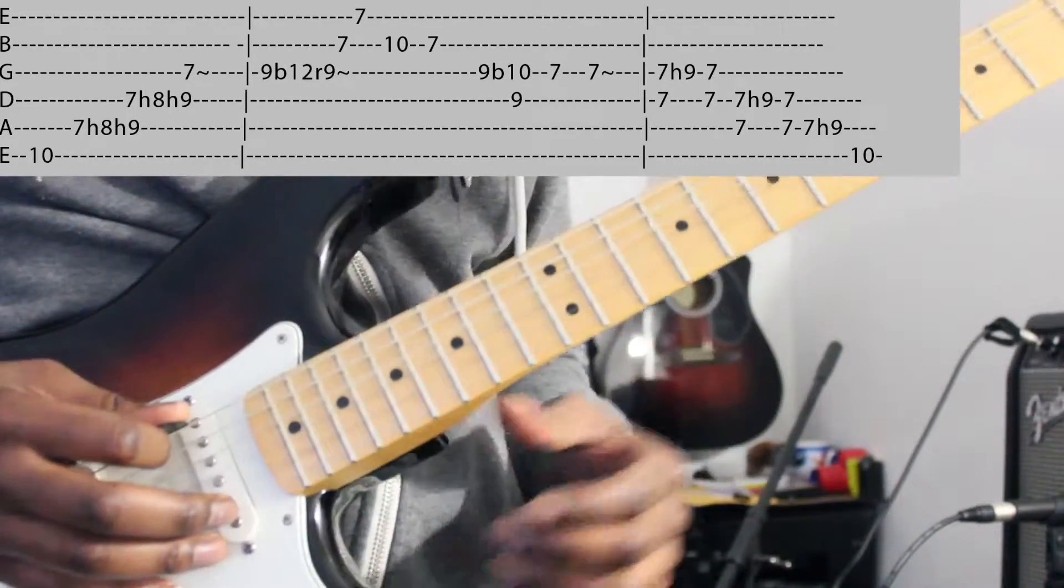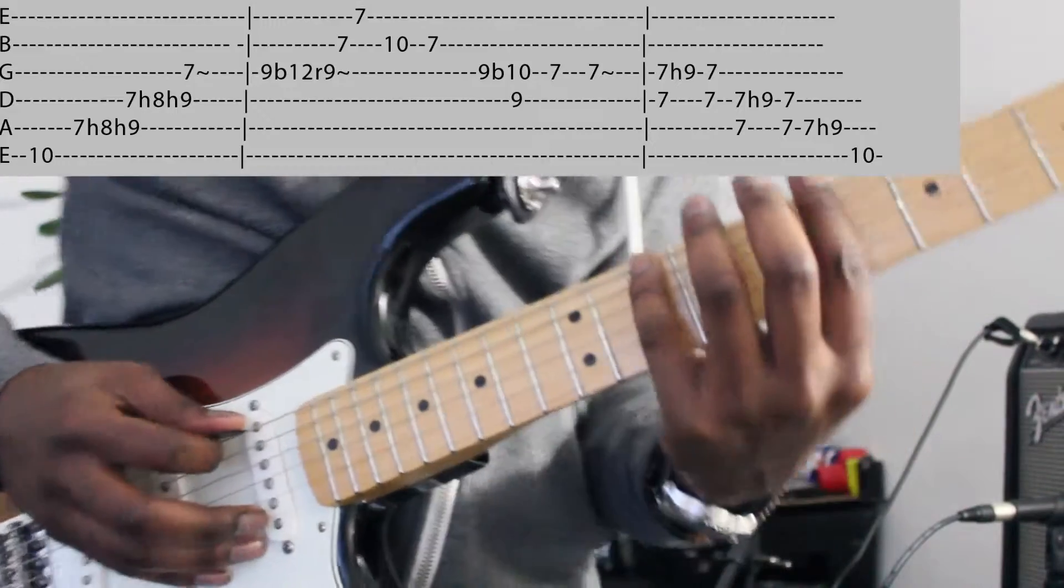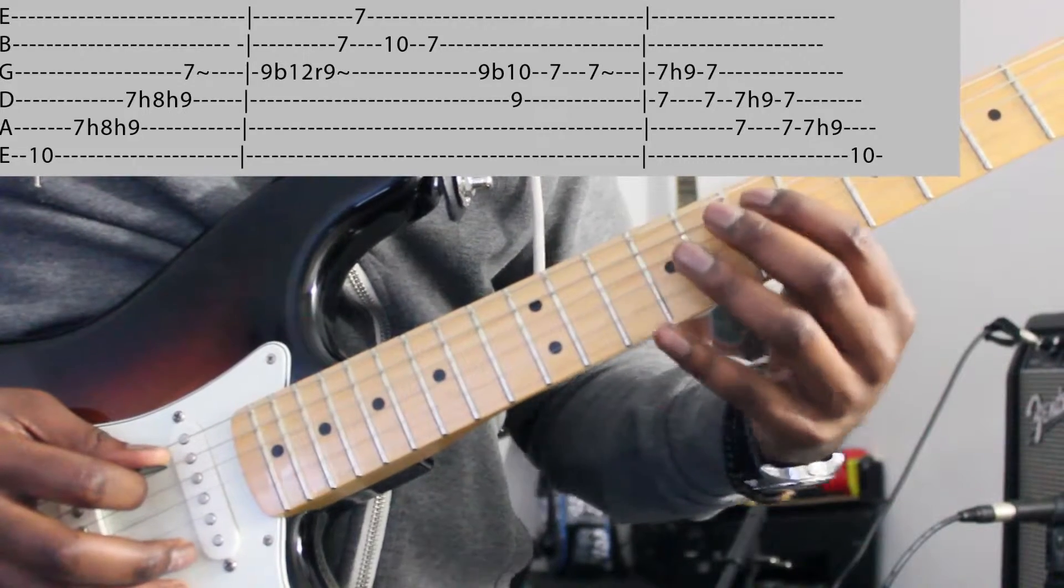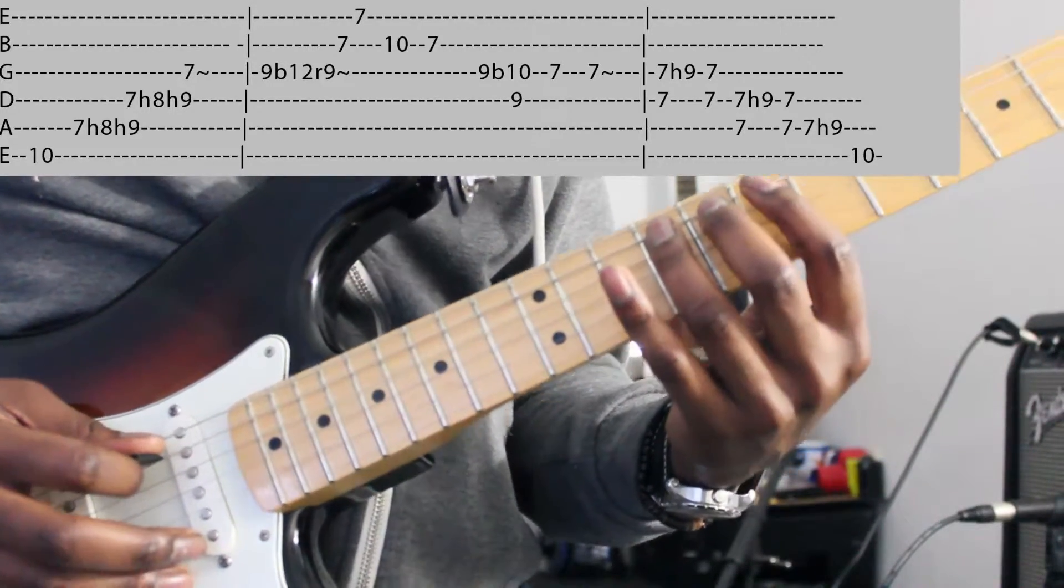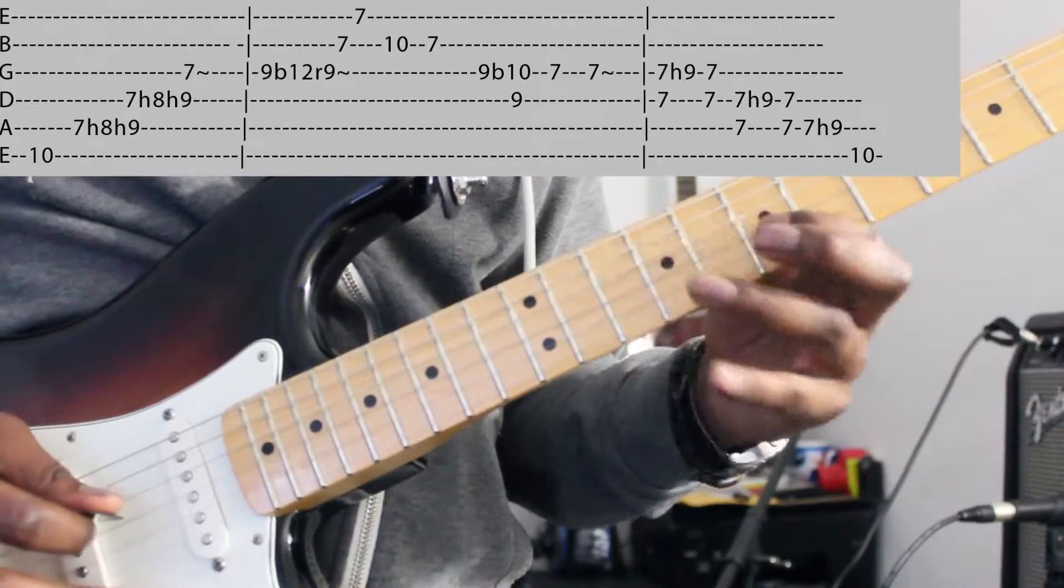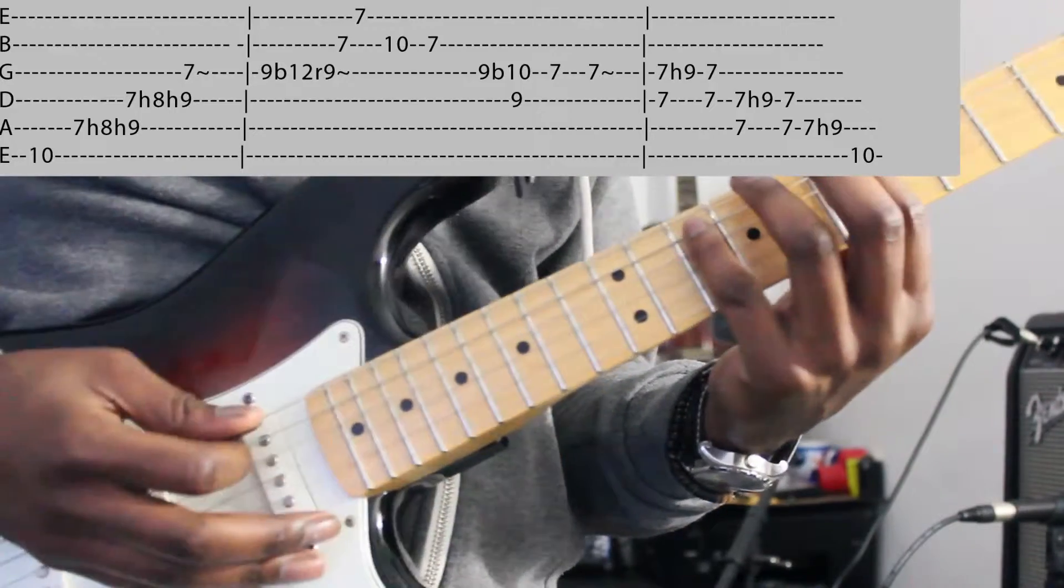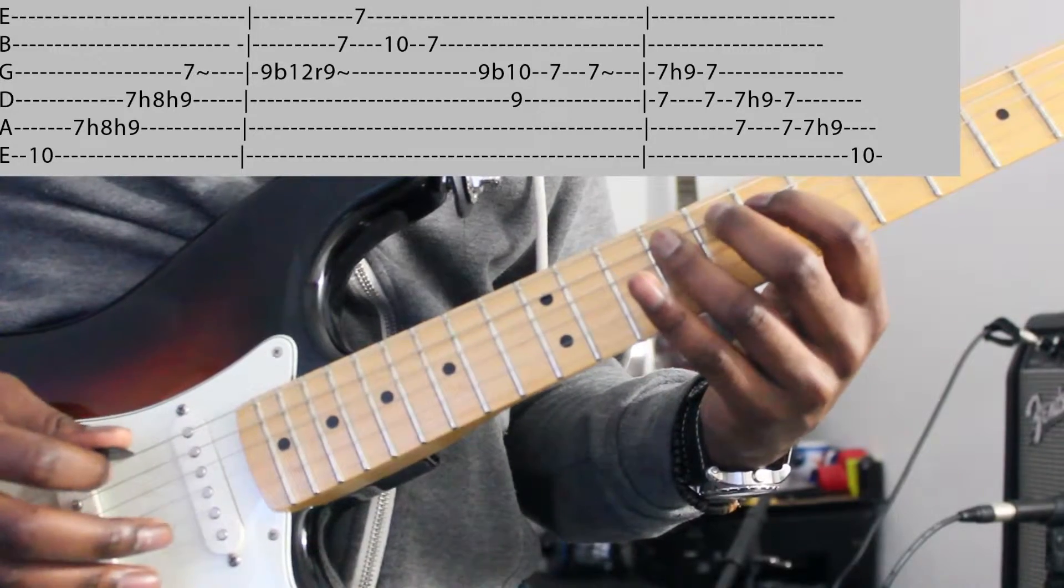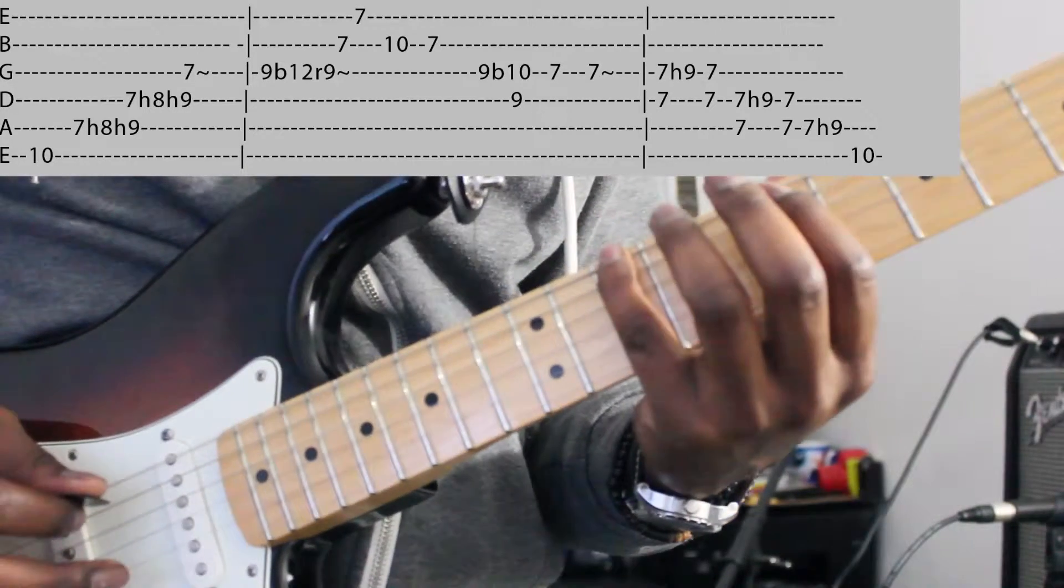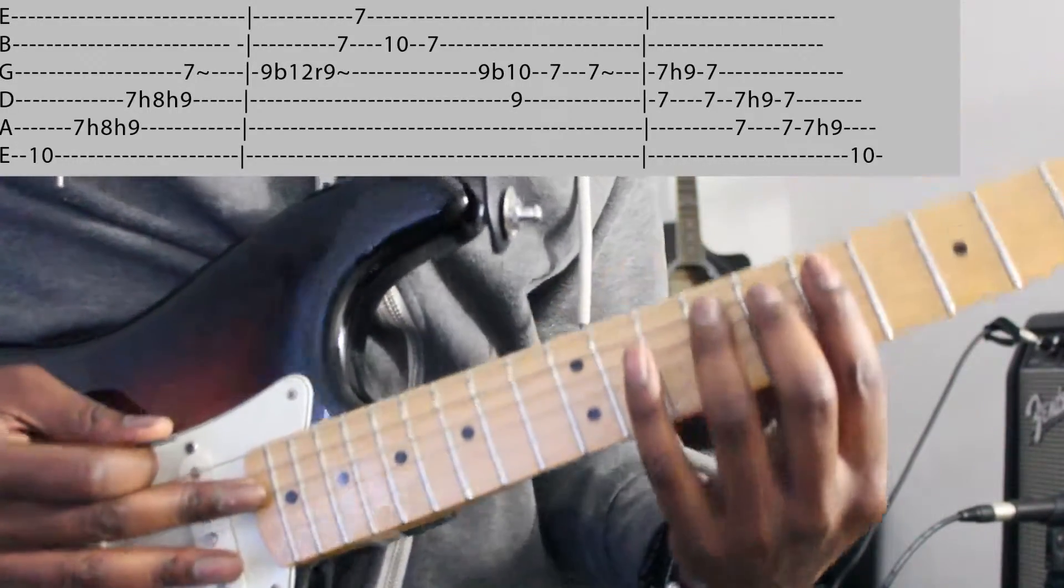So we start at fret 10 of the E string, the very last one. What do we do? We do a 10, and then we're going to do here 7, 8, and 9. And we're going to do it in legato. That means basically we play once with the right hand, and then we come to do hammers. So 10, 7, 8, 9. That was on the A string. I hope you saw it.